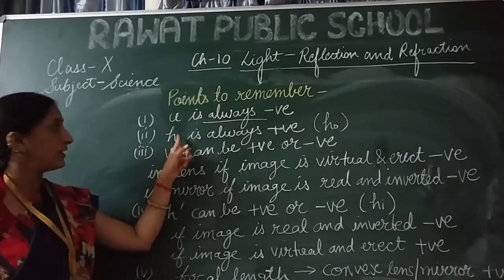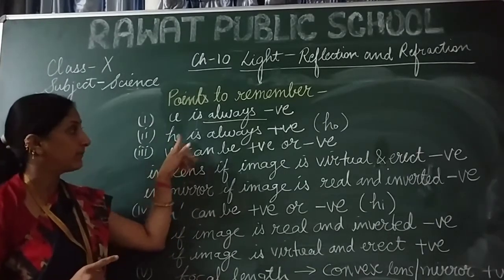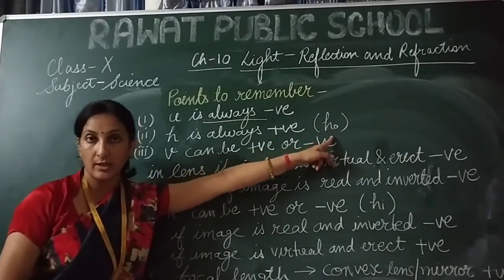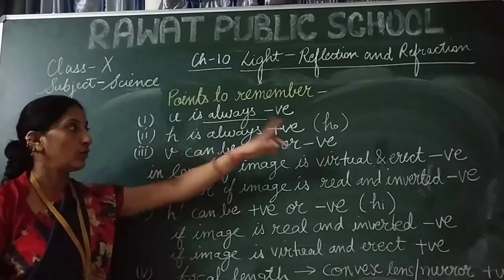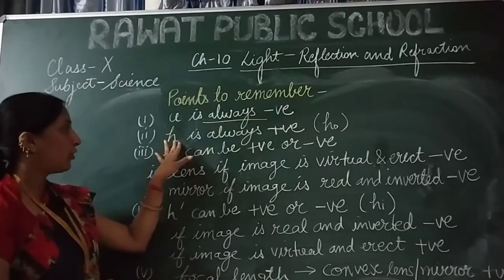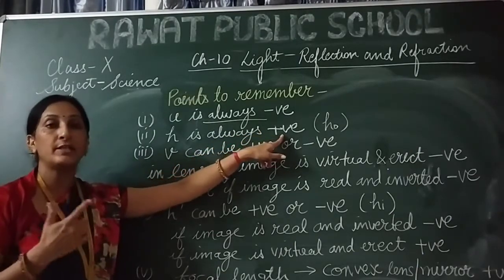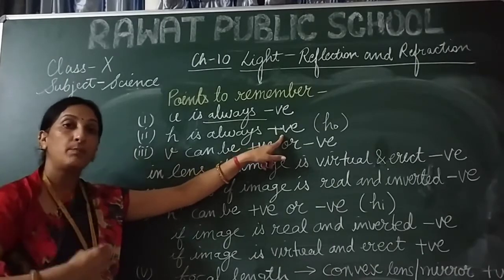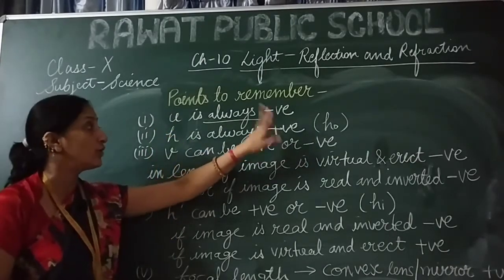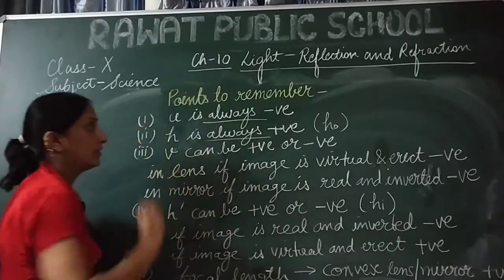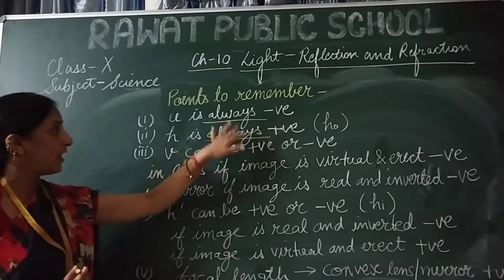The second point is: the height of the object, denoted as h or h₀, is always positive. We always keep the object above the principal axis, so the height of the object is always positive — whether it's a lens or a mirror. There is never any change in these two: U and h are always negative and positive respectively.